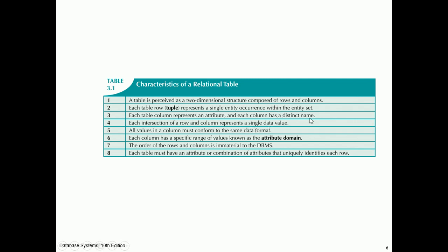Characteristics of a relational table: each column has a distinct name; each intersection of a row and column represents a single data value; all values in a column must conform to the same data format; each column has a specific range of values known as the attribute domain; the order of rows and columns is immaterial to the database management system; and each table must have an attribute or combination of attributes that uniquely identifies each row.